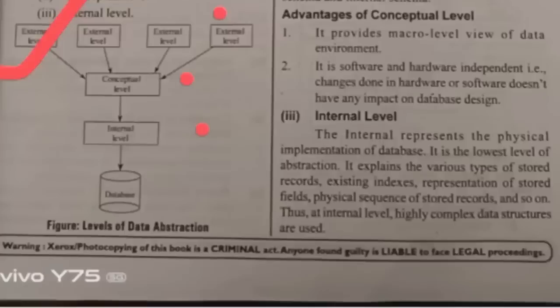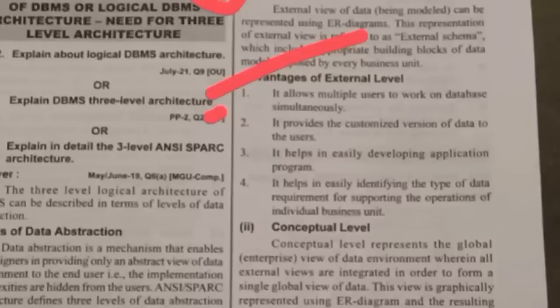The external level is where we are seeing only the required data. We are not accessing the whole database. By entering your hall ticket number, it will show only your results — it will not show your friends' results. That is called the external level. One advantage of the external level is it allows multiple persons to work on the database at the same time. While checking Osmania University results, thousands of students can check at one time.